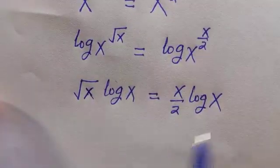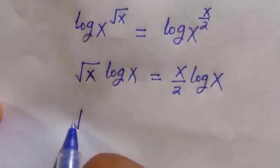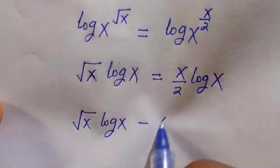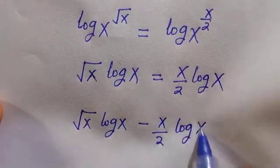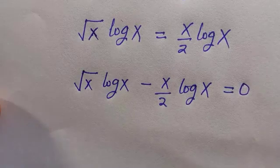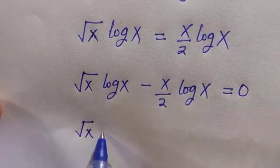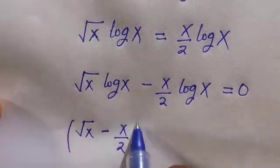You can try to cancel log x here, but it will not give us the full answer. What to do is transfer x over 2 log x to the left hand side. Then we have root x log x minus x divided by 2 log x equals 0. The next thing is we can factor out log x.